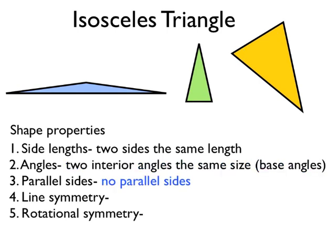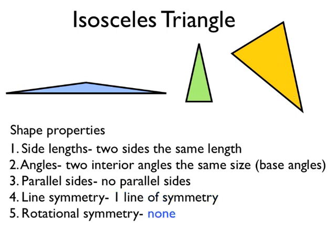There are no parallel sides in an isosceles triangle. There is one line of symmetry, which you can see drawn on as a dashed line on those triangles. And an isosceles triangle has no rotational symmetry.